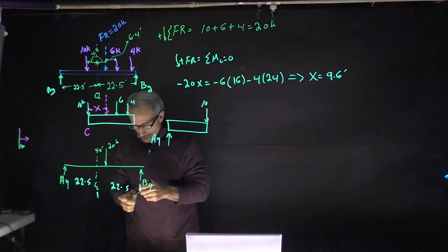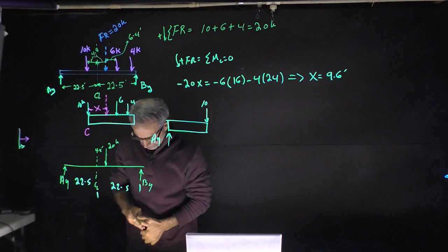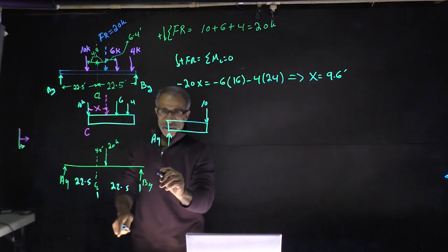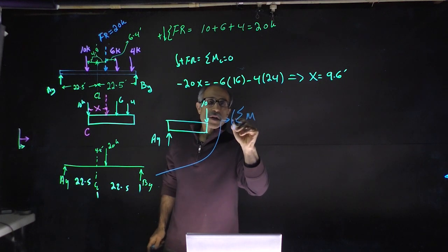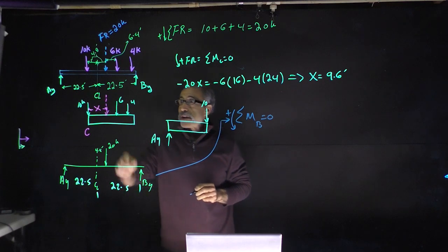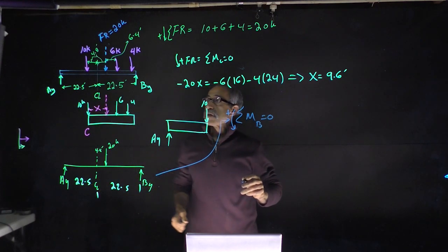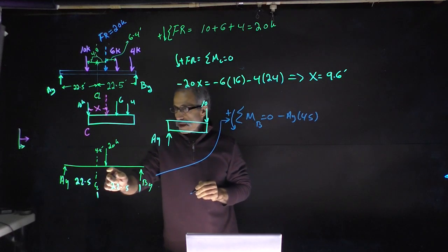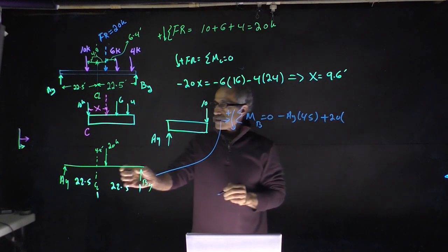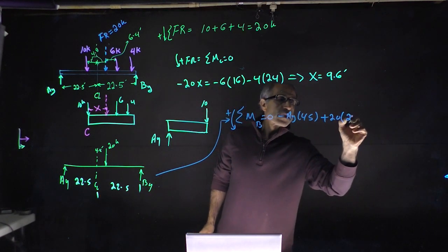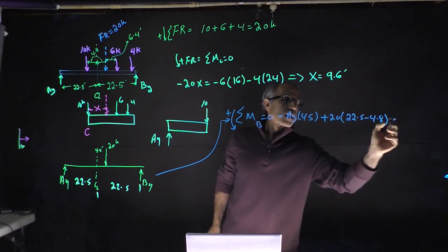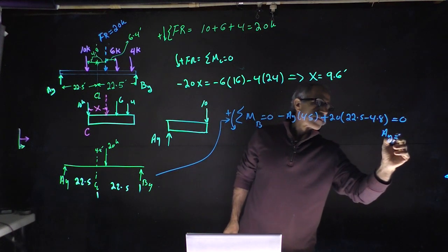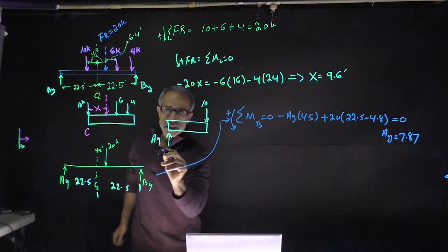To find Ay, take moments about B, counterclockwise positive, equal zero. We get: negative Ay times 45 plus 20 times (22.5 minus 4.8) equals zero, which gives 20 times 17.7 equals Ay times 45. Therefore Ay = 7.87 kips.